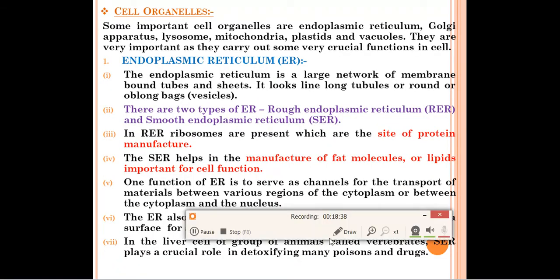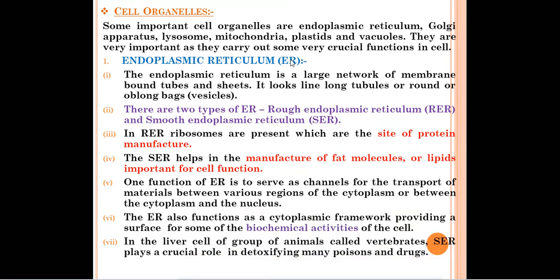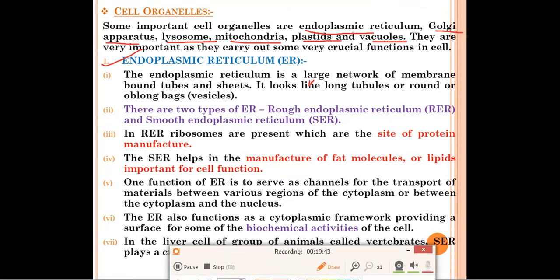Next we will start with cell organelles. Many cell organelles are present inside the cell: mitochondria, endoplasmic reticulum, Golgi apparatus, plastids, vacuoles, and lysosomes. They carry out various crucial functions in cells. First we will start with endoplasmic reticulum, or ER in short. The endoplasmic reticulum is a large network of membrane-bound tubes and sheets — it looks like long tubules or round or oblong vesicles.